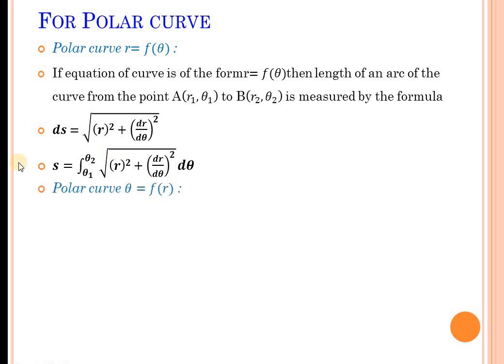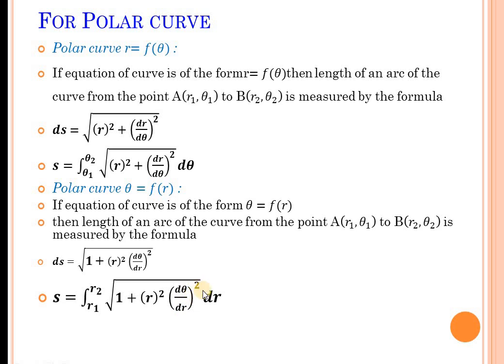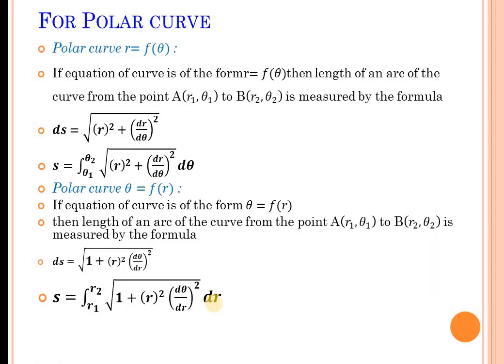Now, if the polar curve is given as θ equals a function of r, then in that case S is given as the integration from r₁ to r₂ of the square root of 1 plus r² times (dθ/dr)² dr. With all these formulas, we apply the appropriate one according to whether the equation of the curve is given in Cartesian form, parametric form, or polar form.